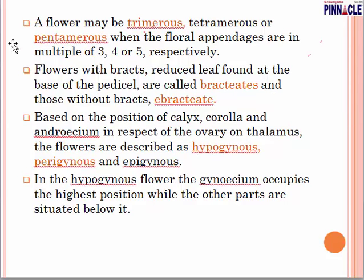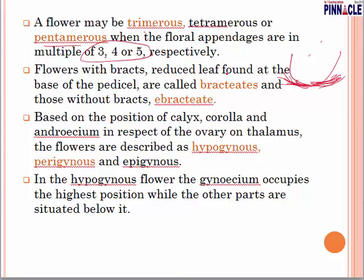A flower may be trimerous, tetramerous, or pentamerous when the flower appendages are in multiples of three, four, or five respectively. Flowers with bracts — a reduced leaf found at the base of the pedicel — are called bracteate, and those without bracts are ebracteate.